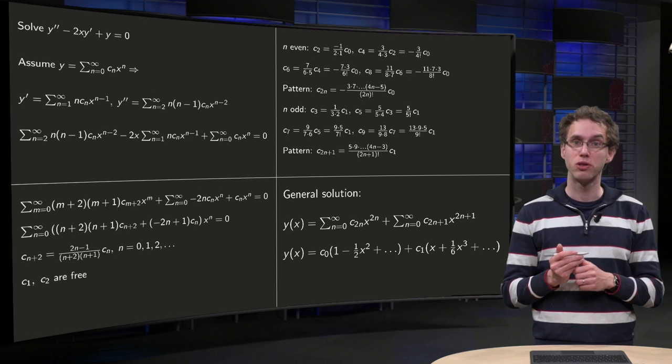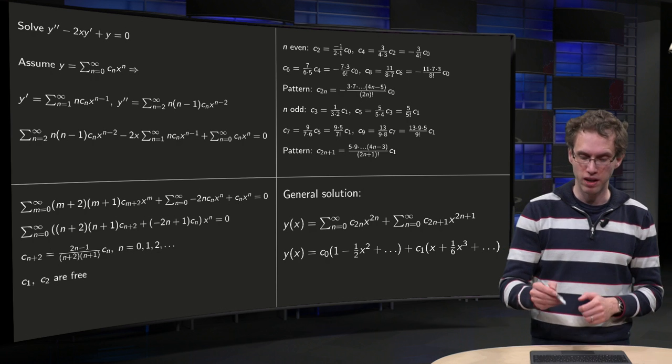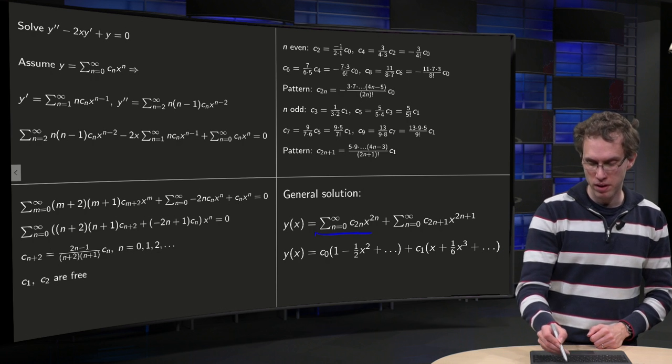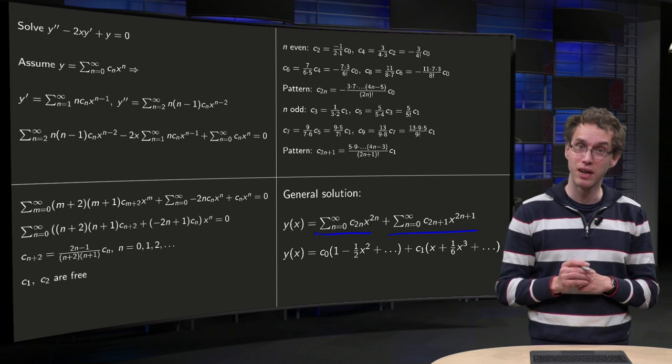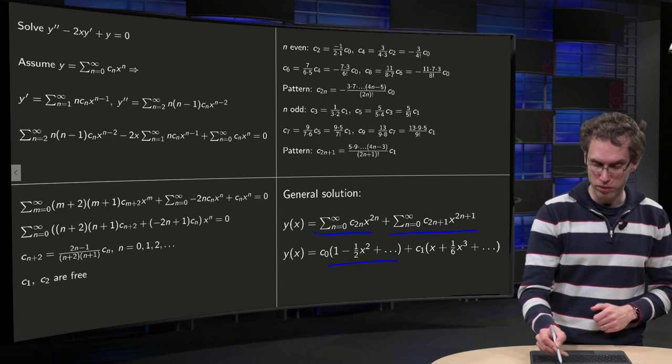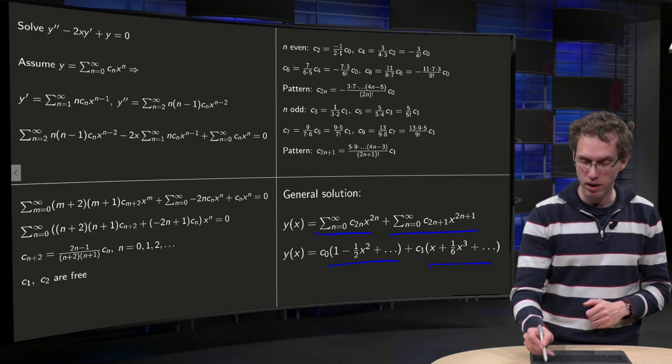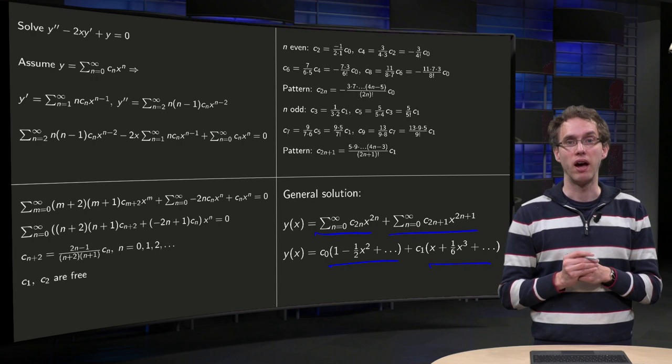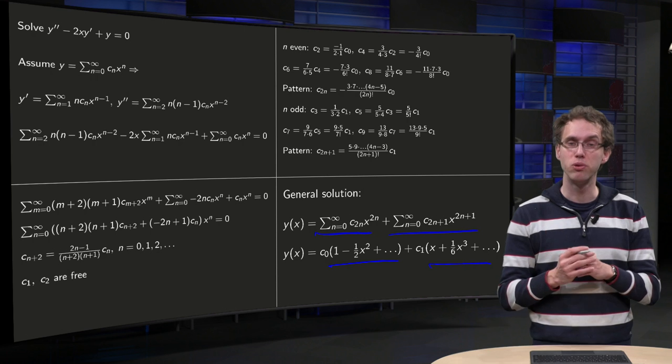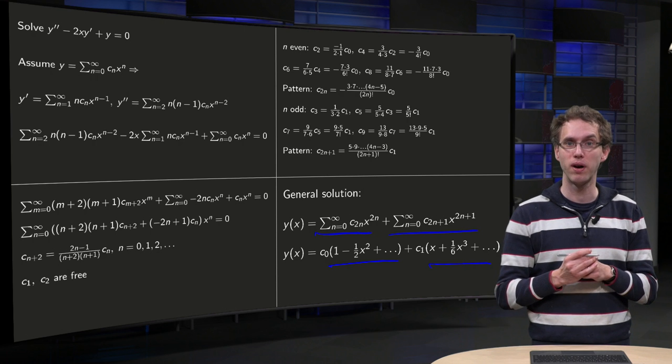So the general solution, how does it look like? It's now fully given. You have the even terms plus the odd terms. And if you write down the first few terms for the even terms, here you have the first few even terms, and here you have the first few odd terms. So there you have your power series. There you have the solution of your differential equation in terms of power series.